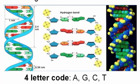All genes are made up of DNA. They have four letters. The code is A, G, C, and T.